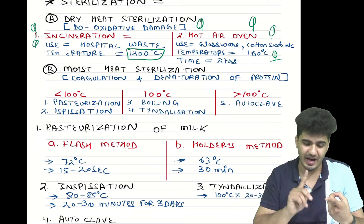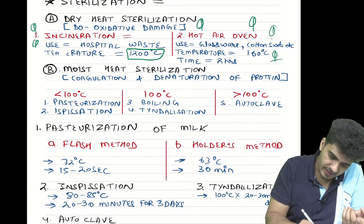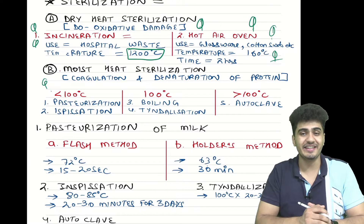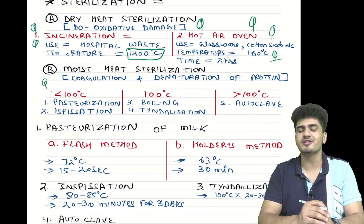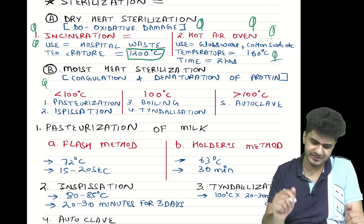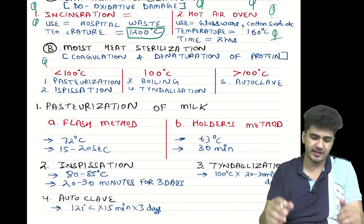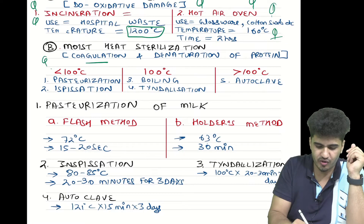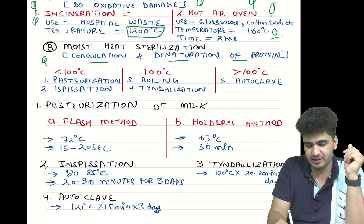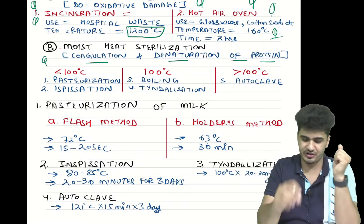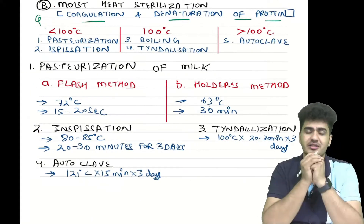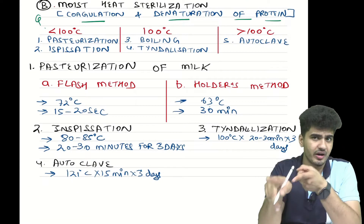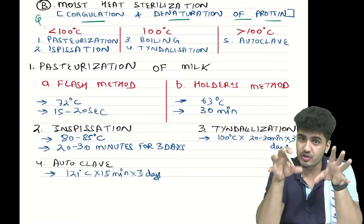The next part is moist heat sterilization. It is divided into three categories based on temperature. The mechanism of action is coagulation and denaturation of protein. The three categories are: less than 100°C, at 100°C, and more than 100°C.